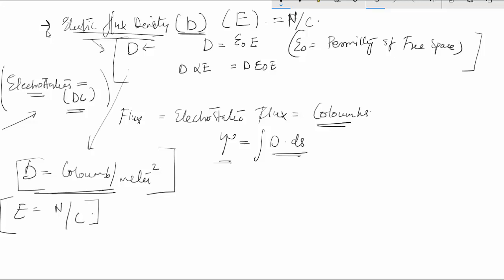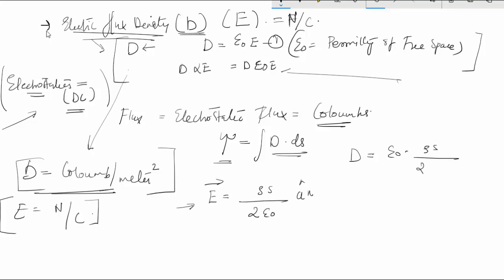We previously found the electric field intensity for a surface charge distribution as rho_s divided by 2 epsilon naught, in the direction of A_n — the normal to the plane on which the charge is located. Applying this to find the electric flux density D, we get D = epsilon naught times (rho_s / 2 epsilon naught) times A_n, which simplifies to rho_s divided by 2 times A_n. D is a vector quantity in the direction A_n.